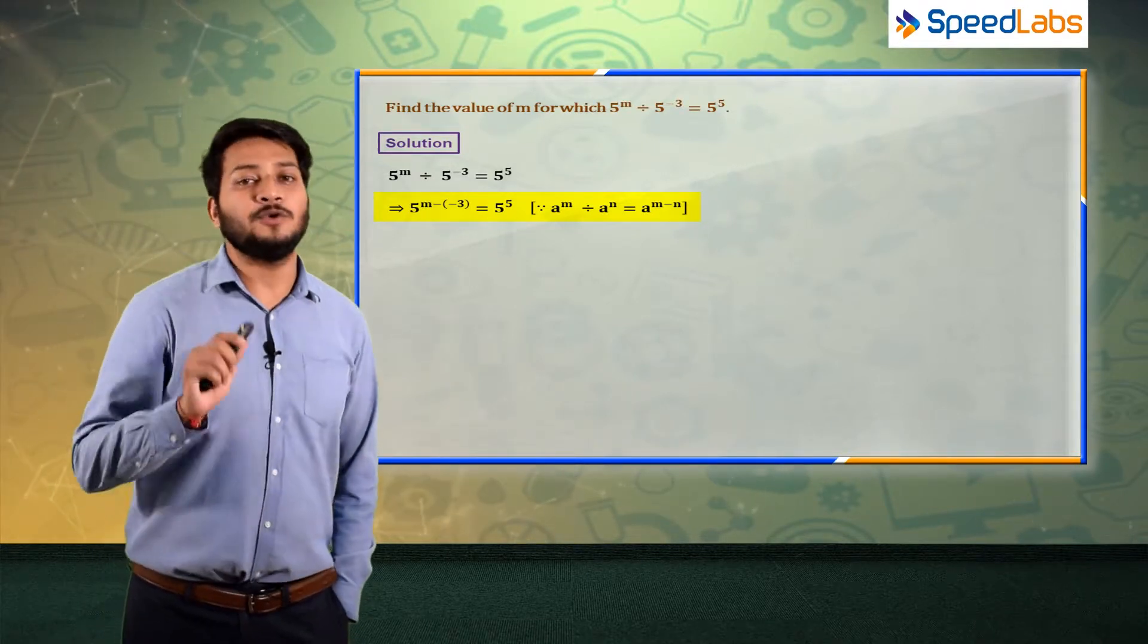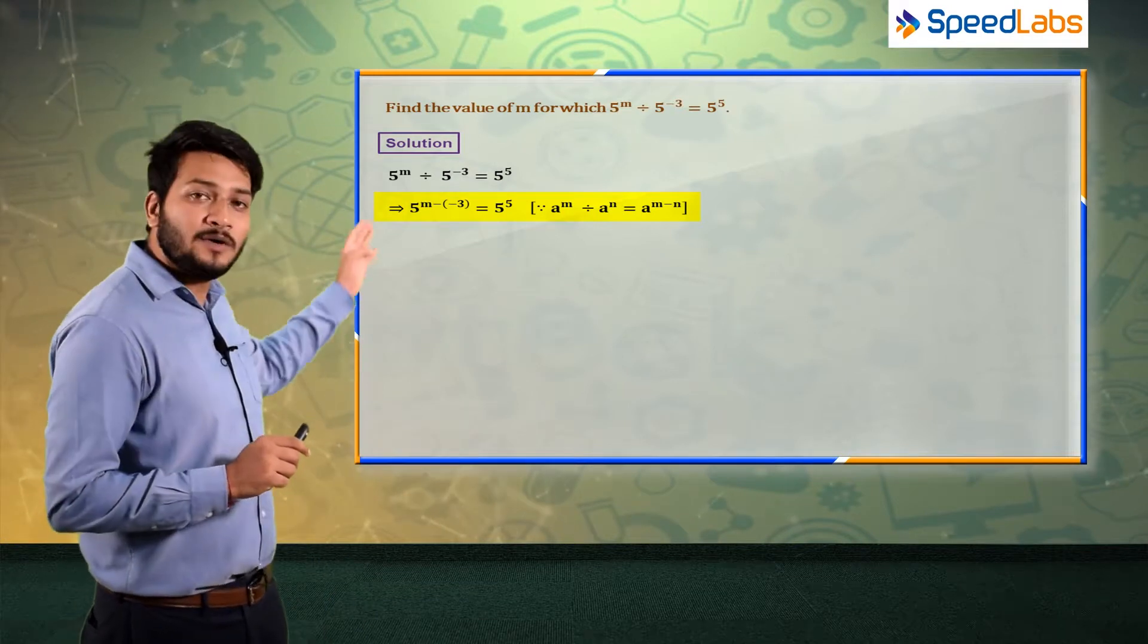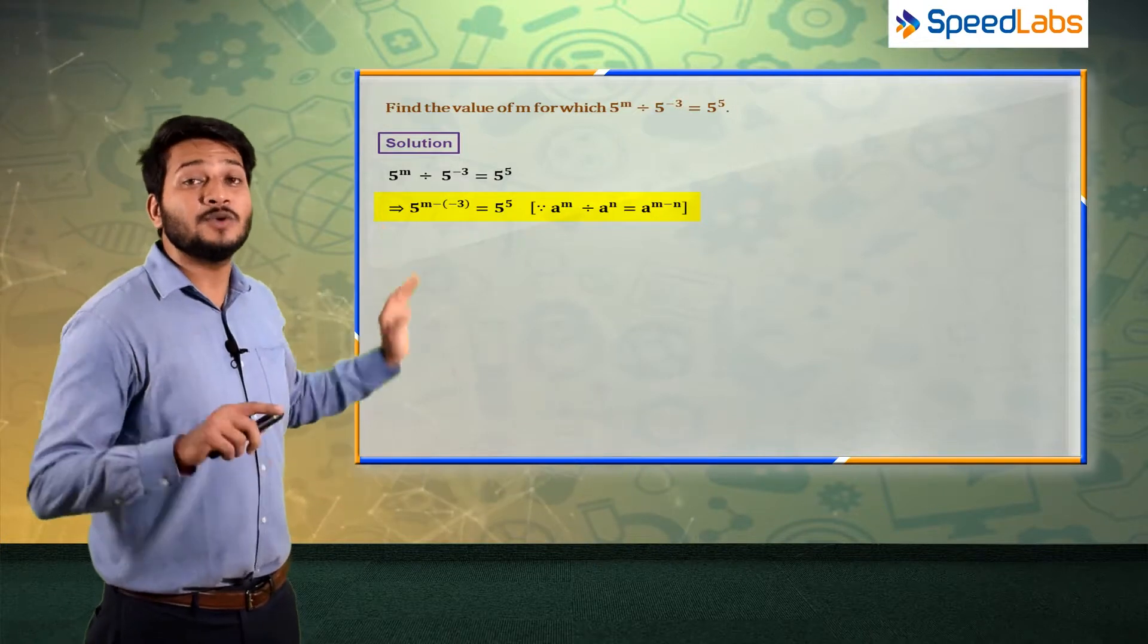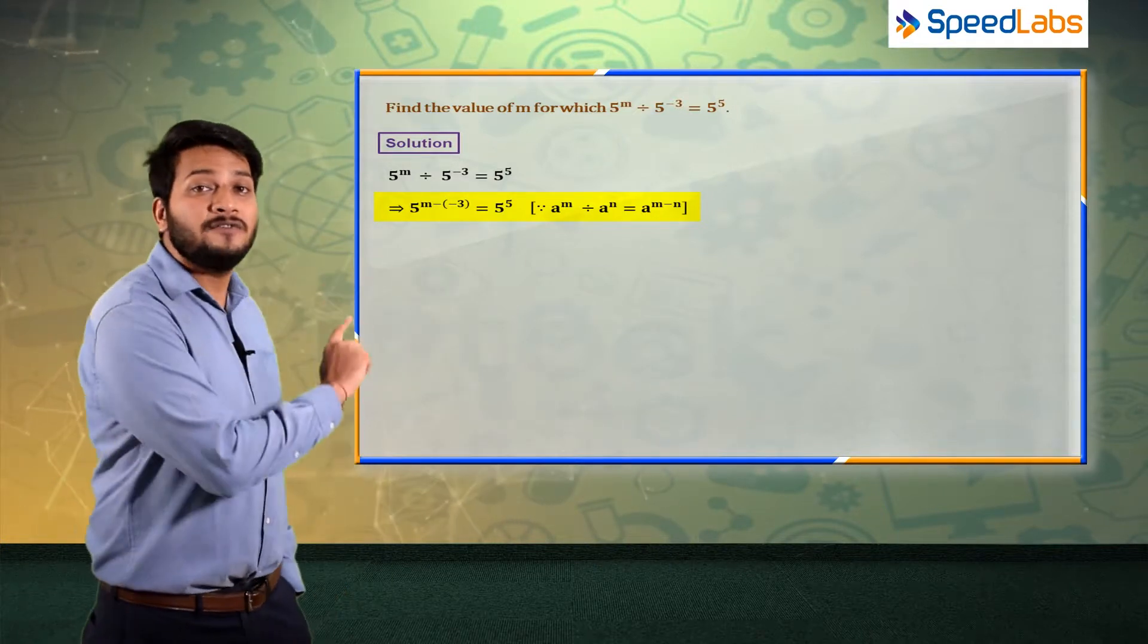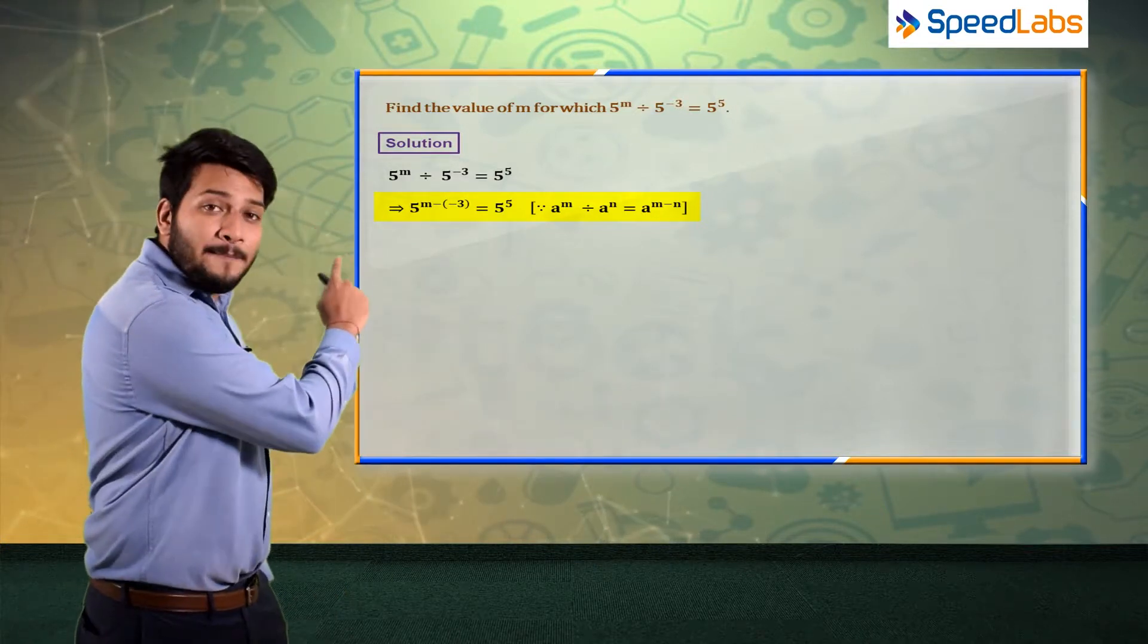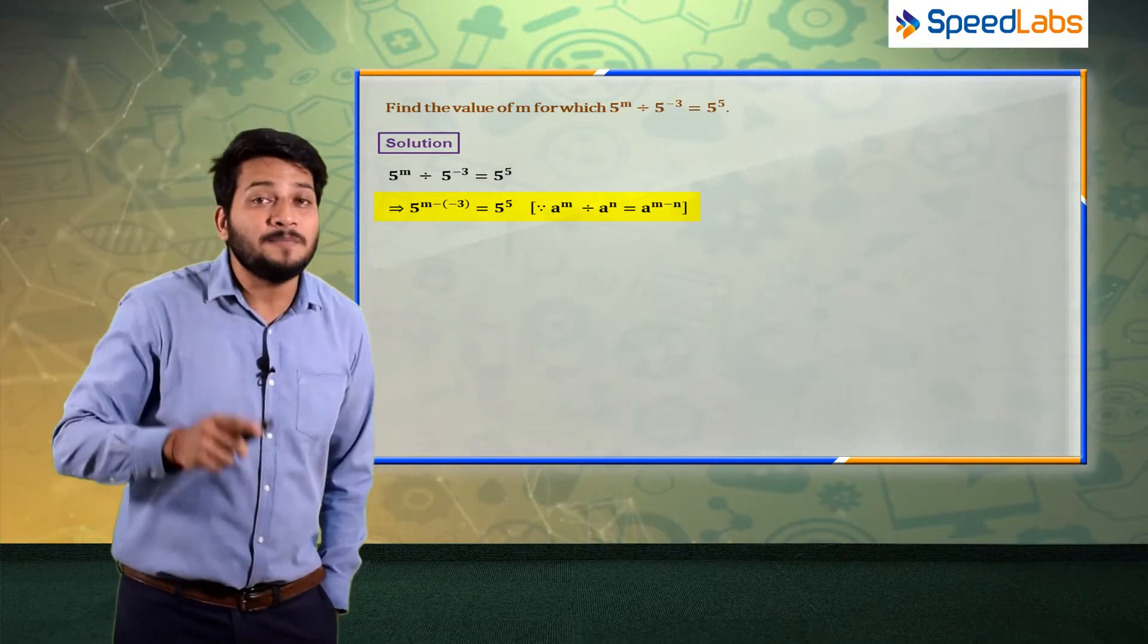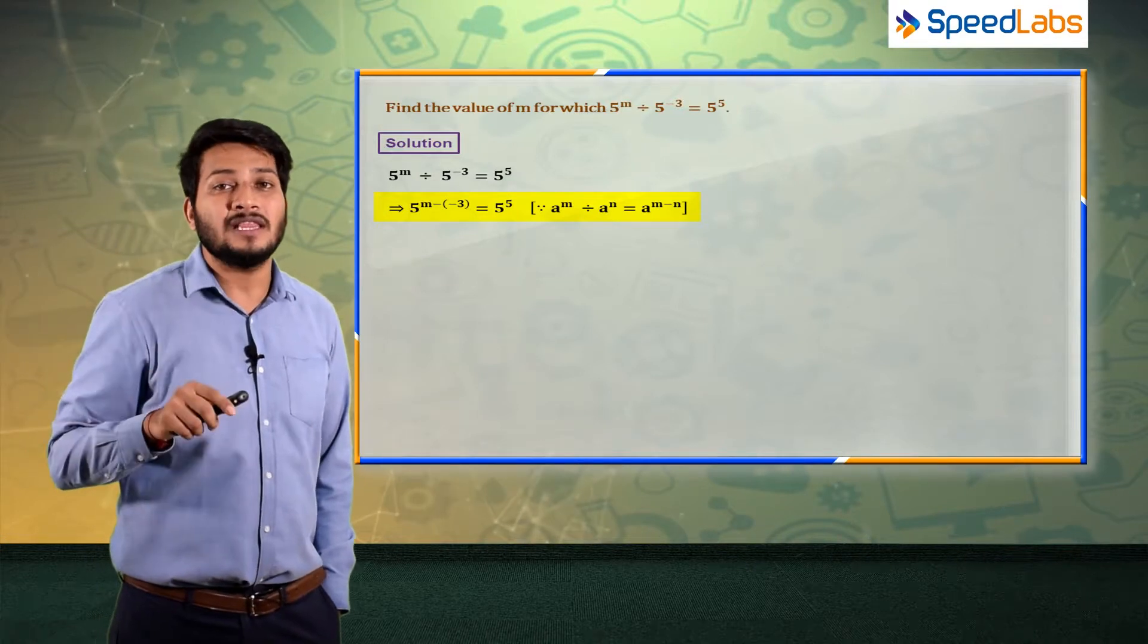So I can say same property here. 5 raised to the power m divided by 5 raised to the power minus 3. This is what I can say: 5 raised to the power m minus minus 3, because the power n is equal to minus 3.